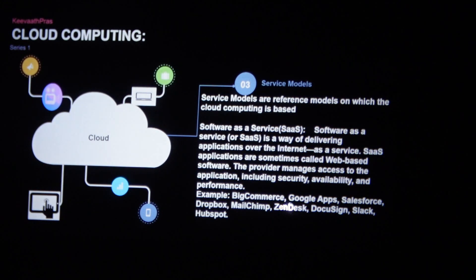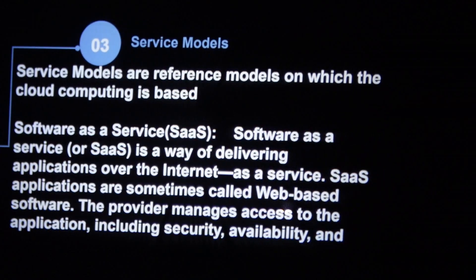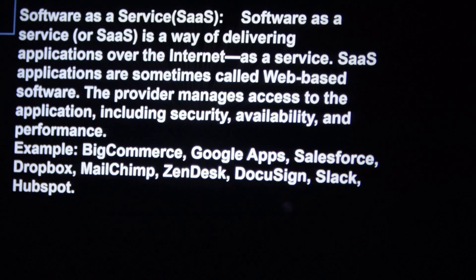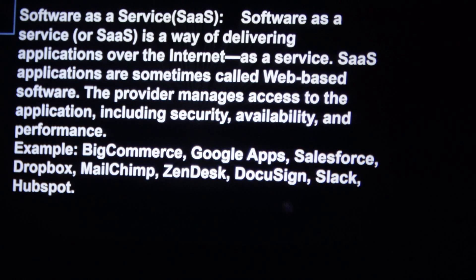Software as a Service — these three are the most important service models. Software as a Service means the software acts as a service. The software service provider manages everything: security, availability, performance. Examples include e-commerce sites and applications like Salesforce — the software behind them comes as a service. To summarize: the three service models are IaaS, PaaS, and SaaS; and the three deployment models are public, private, and hybrid.